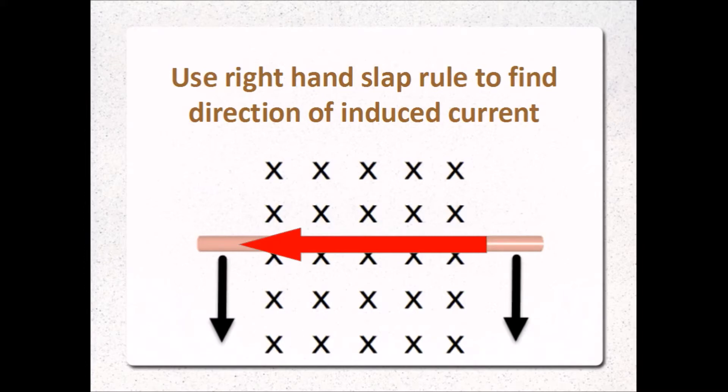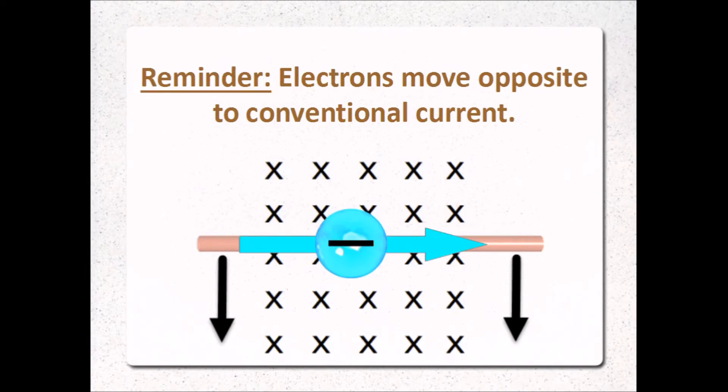If you calculate the voltage induced and know the resistance of the wire, you can also find how much current is flowing. Exam questions usually ask you about the flow of electrons in a situation like this. So remember that electrons flow in the opposite direction to what the right hand rules predict.